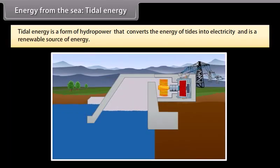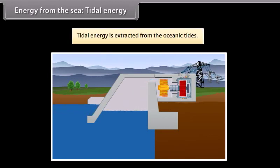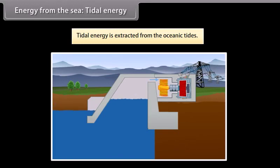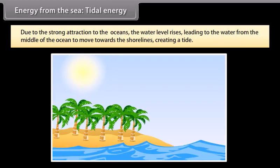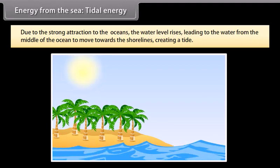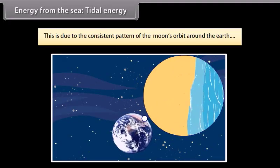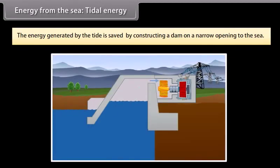Energy from the sea: Tidal energy. Tidal energy is a form of hydropower that converts the energy of tides into electricity and is a renewable source of energy. Tidal energy is extracted from oceanic tides. Tidal forces are periodic variations in gravitational attraction exerted by the moon, creating motions or currents in the oceans. Due to the strong attraction to the oceans, the water level rises, leading water from the middle of the ocean to move towards the shorelines, creating a tide. The energy generated by the tide is saved by constructing a dam on a narrow opening to the sea, and a turbine fixed at the opening of the dam converts this tidal energy to electricity.